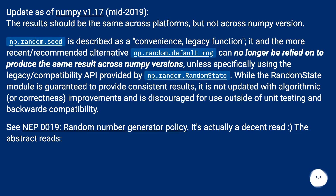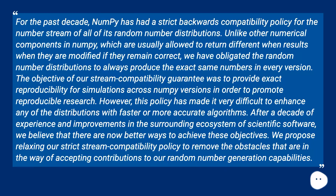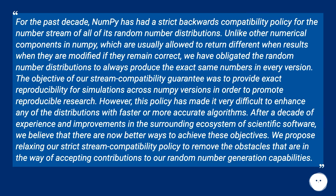It's actually a decent read. The abstract reads: for the past decade, numpy has had a strict backwards compatibility policy for the number stream of all of its random number distributions. Unlike other numerical components in numpy, which are usually allowed to return different results when they are modified if they remain correct, we have obligated the random number distributions to always produce the exact same numbers in every version. The objective of our stream compatibility guarantee was to provide exact reproducibility for simulations across numpy versions in order to promote reproducible research. However, this policy has made it very difficult to enhance any of the distributions with faster or more accurate algorithms. After a decade of experience and improvements in the surrounding ecosystem of scientific software, we believe that there are now better ways to achieve these objectives. We propose relaxing our strict stream compatibility policy to remove the obstacles that are in the way of accepting contributions to our random number generation capabilities.